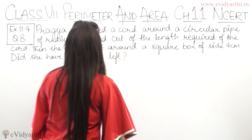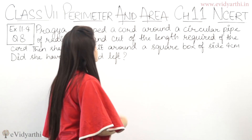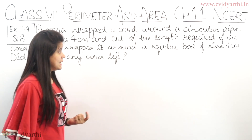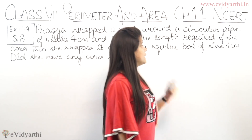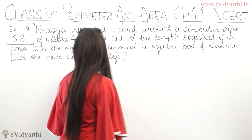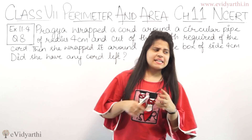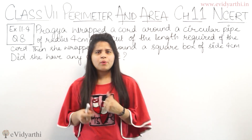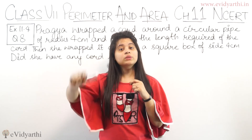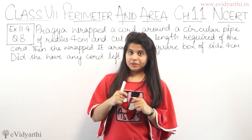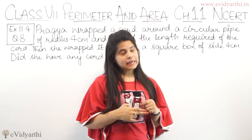In this question, Pragya wrapped a cord around a circular pipe of radius 4 centimeters and cut out the length required of the cord. A cord, you can say it is like a pipe or wire, wrapped around a circular pipe, and the extra wire was cut.